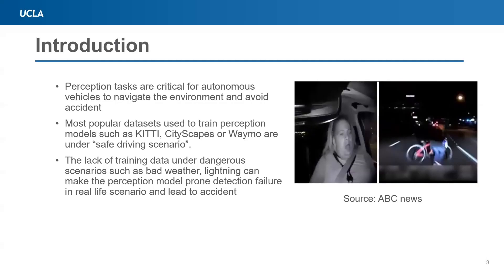Perception tasks are critical for autonomous vehicles to navigate around the environment and avoid accidents. However, most of the popular datasets that are being used to train perception models, such as KITTI, CityScape, and Waymo, are under safe driving scenarios, which means they don't get into any accidents.